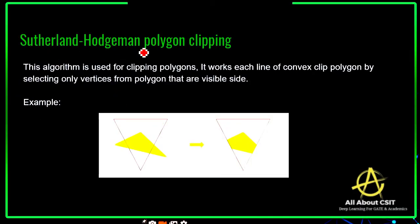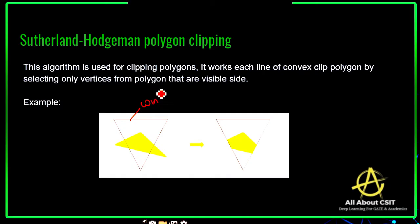Now coming to the Sutherland-Hodgeman polygon clipping algorithm. This algorithm is used for clipping polygons. It works by processing each edge of a convex clip polygon, selecting only vertices from the polygon that are visible inside. The visible side is selected and the polygon present outside the window is discarded. In this example, the polygon part inside the window is selected and the remaining outside is clipped, giving us the final clipped polygon output.